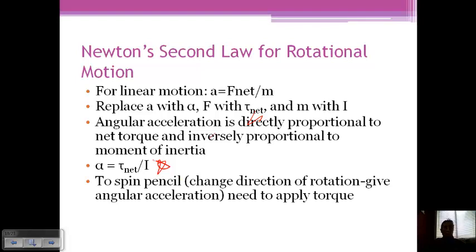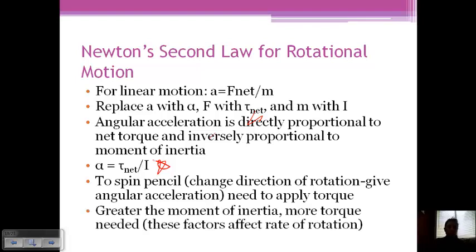Okay, so to spin a pencil or change the direction of the rotation, we need to give it angular acceleration. And to do this, we need to apply torque. And so the greater the moment of inertia, the more torque that is needed. And these are the two factors that are going to affect your rate of rotation. Okay, so because my moment of inertia was pretty low, I'm easily able to rotate this. But if I change the distance or I change the mass, then I'm going to need more torque and I have a larger moment of inertia.